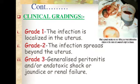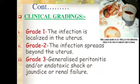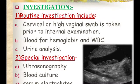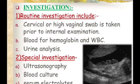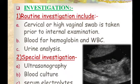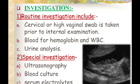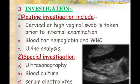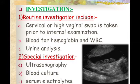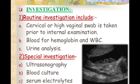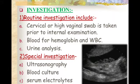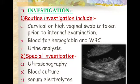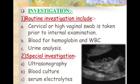Investigations for septic abortion: Routine investigation includes cervical or high vaginal swab taken prior to internal examination, blood for hemoglobin and WBC count, and urine analysis. Special investigation includes ultrasonography of pelvis and abdomen to detect intrauterine retained products of conception or foreign bodies. Blood culture is taken if associated with chills and rigors.